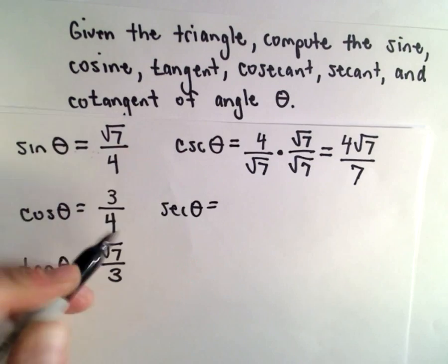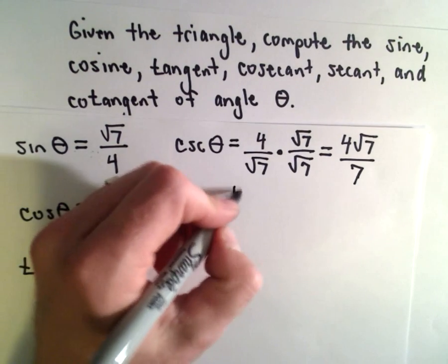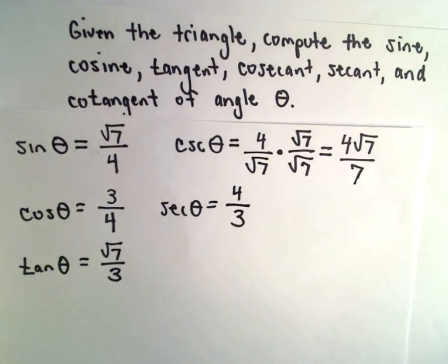Then we have secant of theta, same thing, I'm just going to flip the fraction, that'll be 4 thirds. So we don't have to rationalize anything there, it's already rationalized.